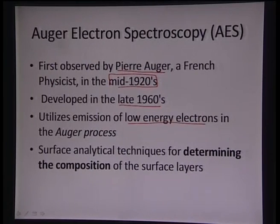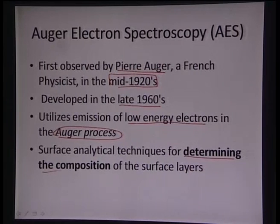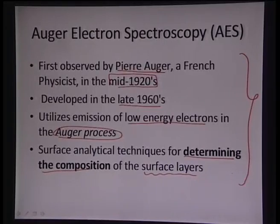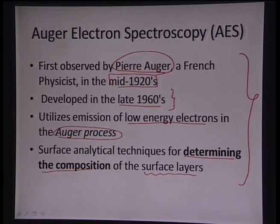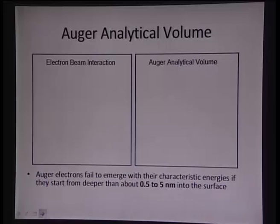Auger electron spectroscopy utilizes emission of low energy electrons generated by the Auger process. It is a surface analytical technique for determining the composition of the surface layer — highly surface sensitive. Once we initiate an electron beam, we need to understand how it interacts with the material.